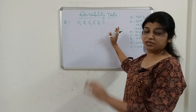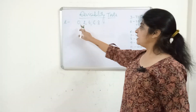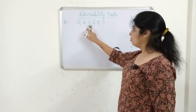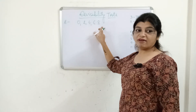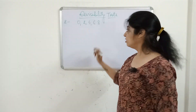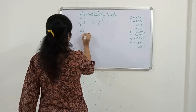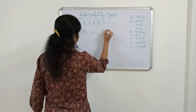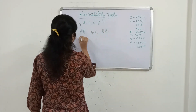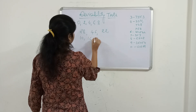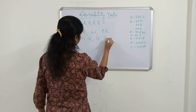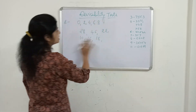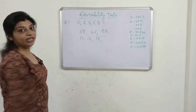At the units or ones place, the digit should be 0, 2, 4, 6, or 8. For example: 28, 46, 22, 10, 16, 18, 20. All these are divisible by 2.